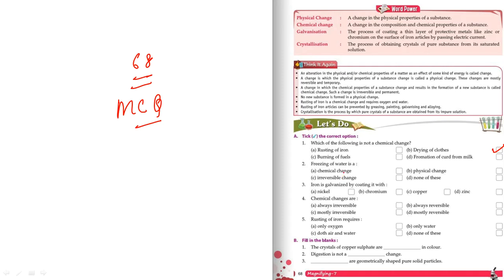Next: freezing of water is a physical change — freezing water is always a physical change. Iron is galvanized by coating it with zinc. Chemical changes are always irreversible — you cannot reverse them. Rusting of iron requires both air and water.